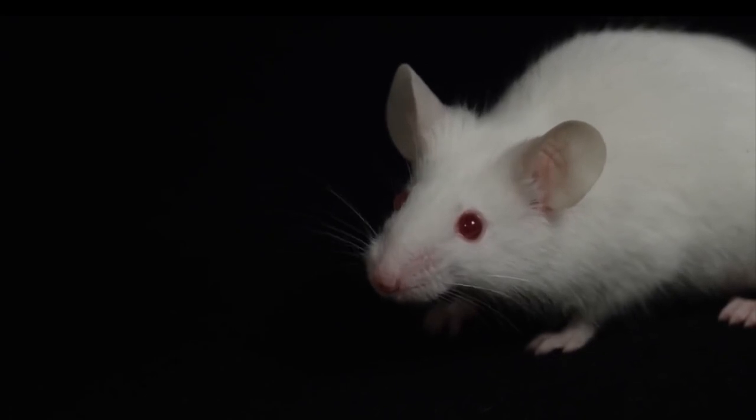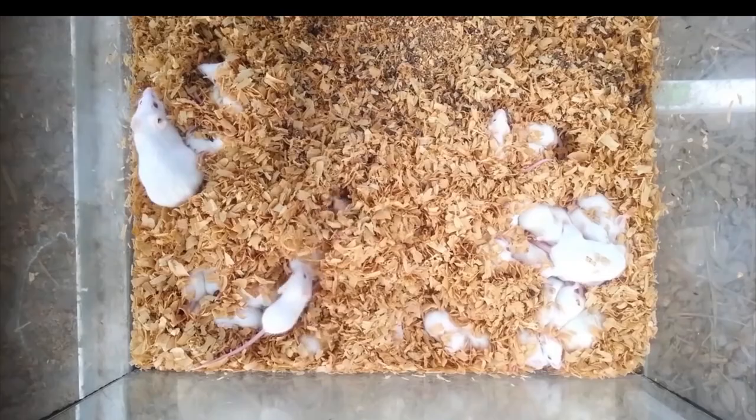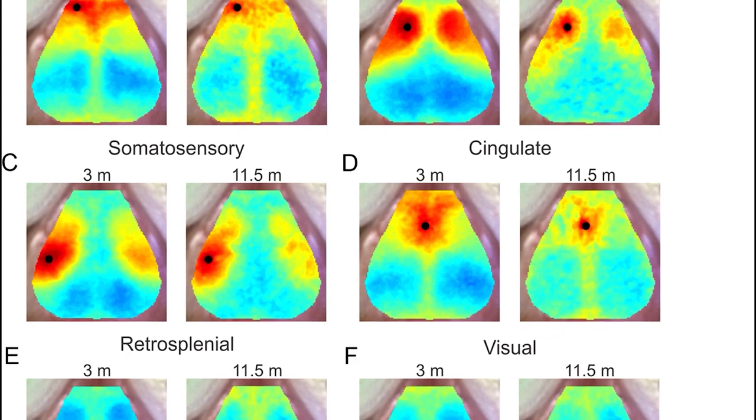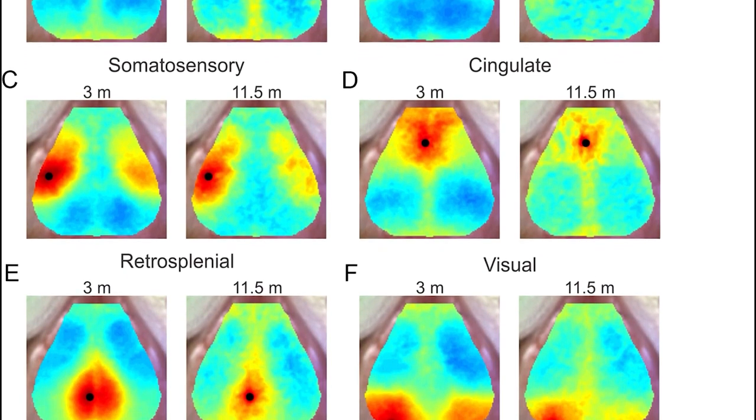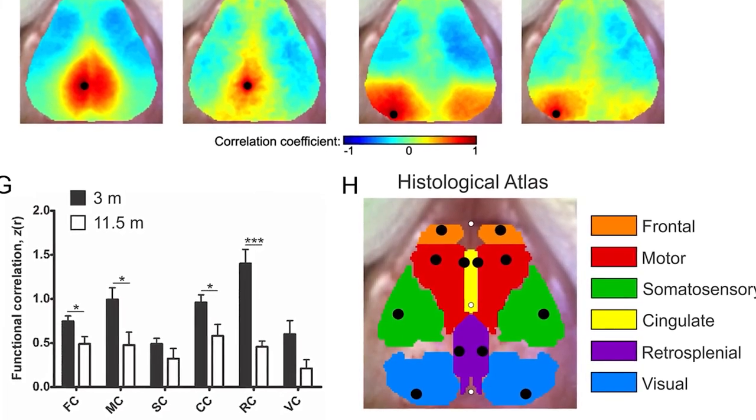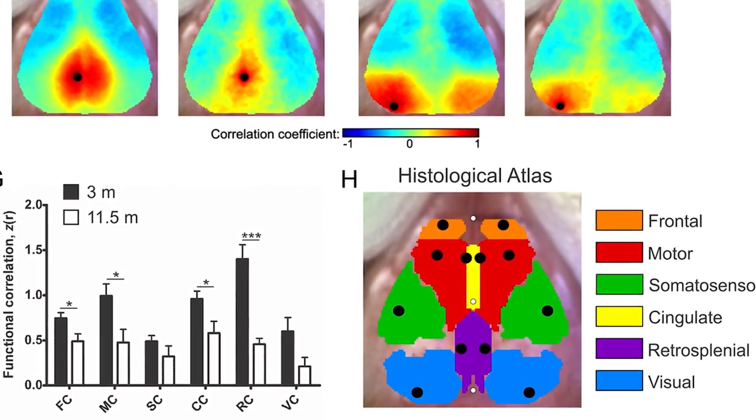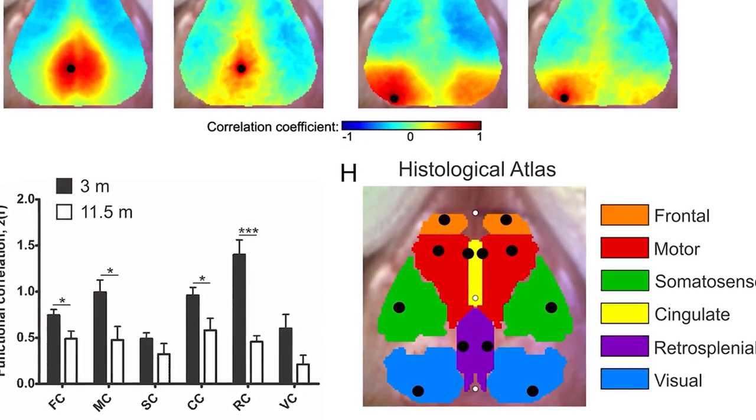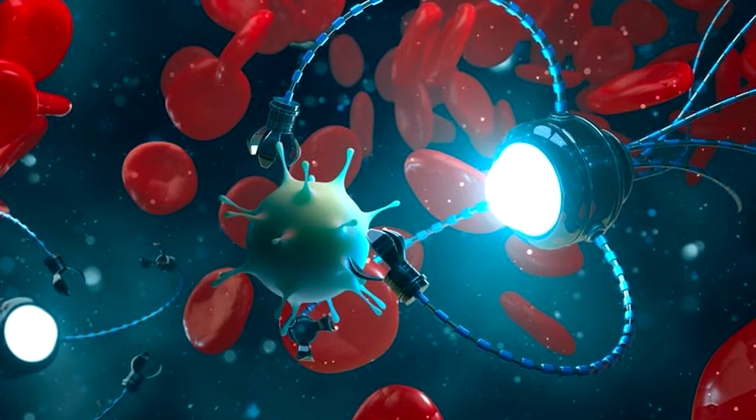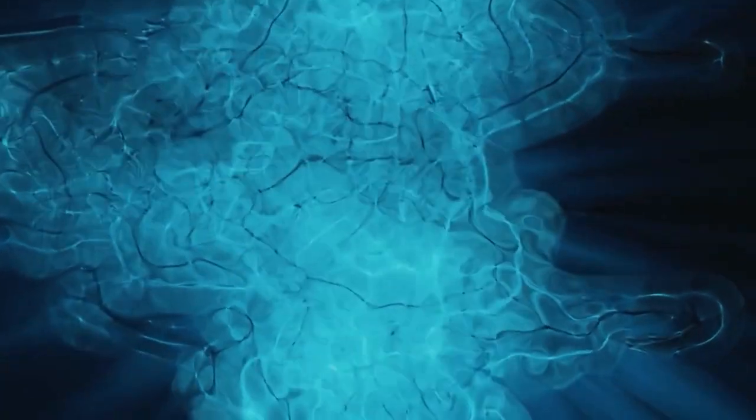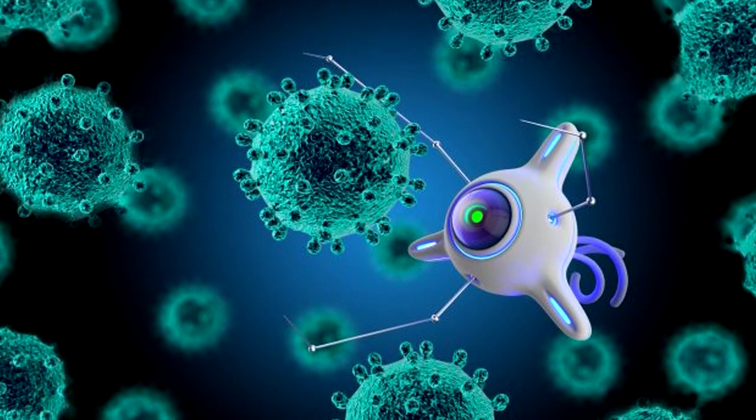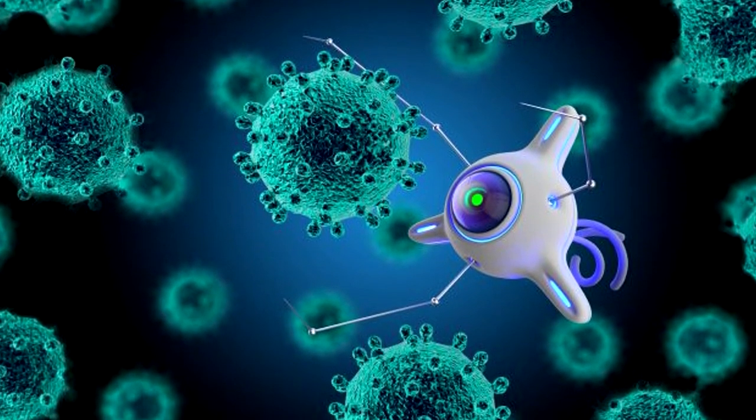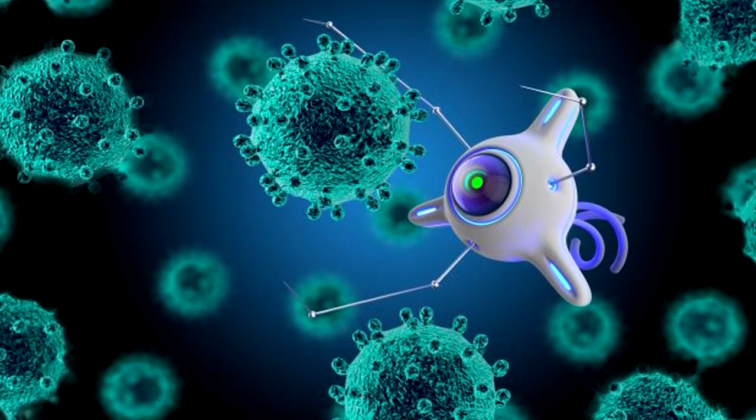Three out of eight mice receiving the nanobot therapy showed complete deterioration of the tumors. In mice, the researchers also discovered that the nanorobots were both safe and efficient in shrinking tumors. After a day and a half, the vast majority of nanorobots had been removed from the body. Median survival duration in the mouse model doubled from 20 days to 45 days, and I think it was pretty impressive for such an early trial.